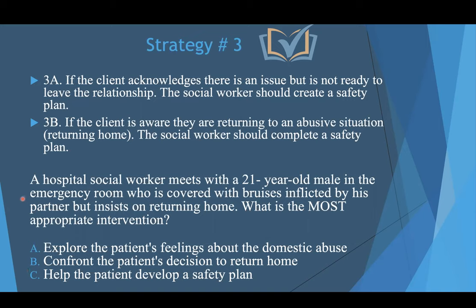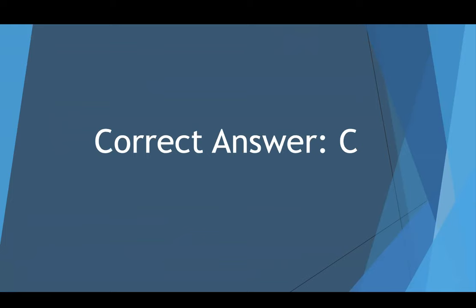Based on the strategy and the answer options here, we're not going to do A — explore the patient's feelings about the domestic abuse — that's not the most appropriate intervention given that this patient wants to return home, and A would not address the question. B — confront the patient's decision to return home — again, we're not going to confront the client based on this information. C — help the patient develop a safety plan — would be the correct answer. Because if the client wants to return home and they're aware they're returning to an unsafe domestic violence situation, we have to create a safety plan for safety measures.